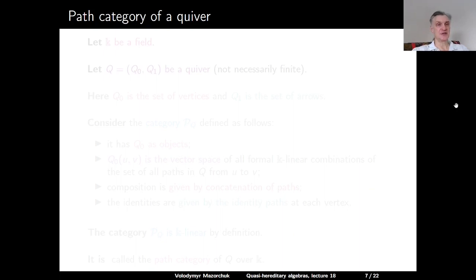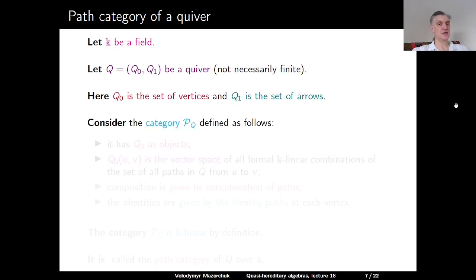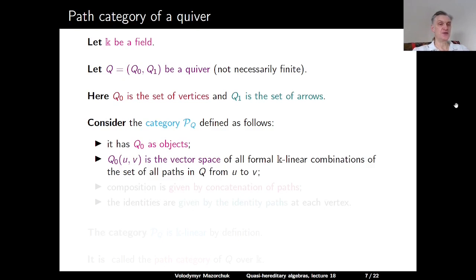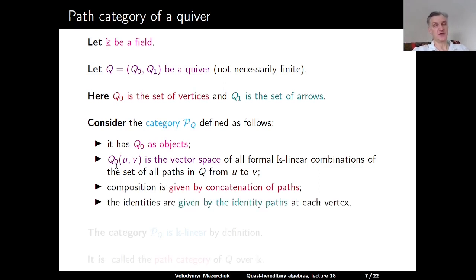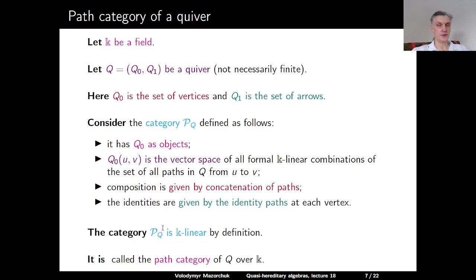Next, let us consider the path category of a quiver. Let k be a field and Q a quiver with vertex set Q_0 and arrow set Q_1. Consider the category PQ defined as follows: the objects are the vertices of Q, and for two vertices u and v, the morphism space from u to v is the vector space of all formal k-linear combinations of the set of all paths in Q from u to v. Composition is given by concatenation of paths, and the identities are given by the trivial (identity) paths at each vertex. The category PQ is k-linear and is called the path category of Q over k.